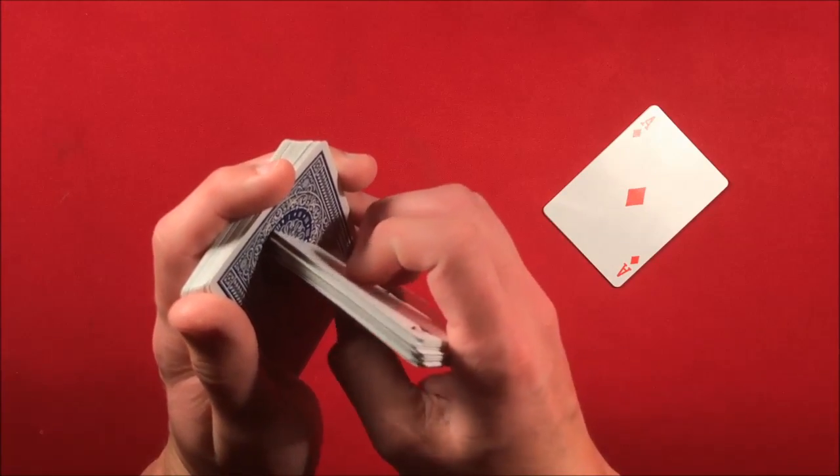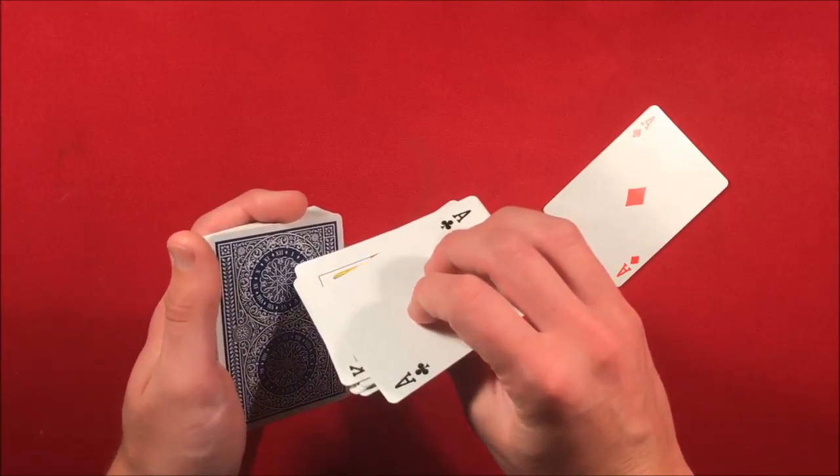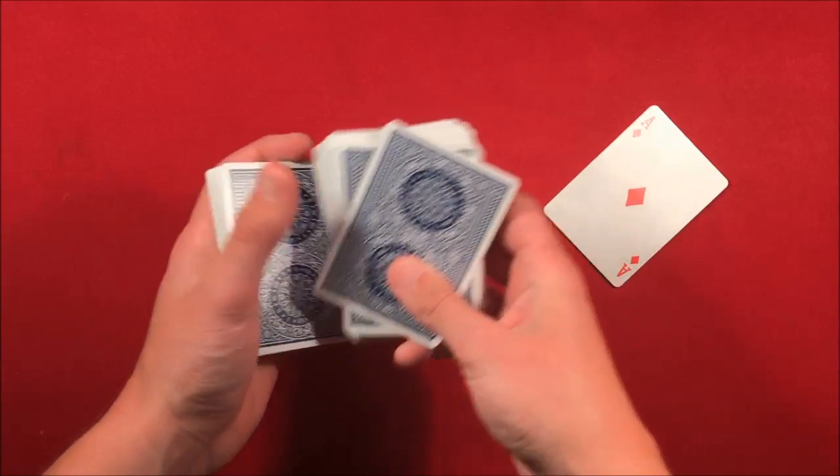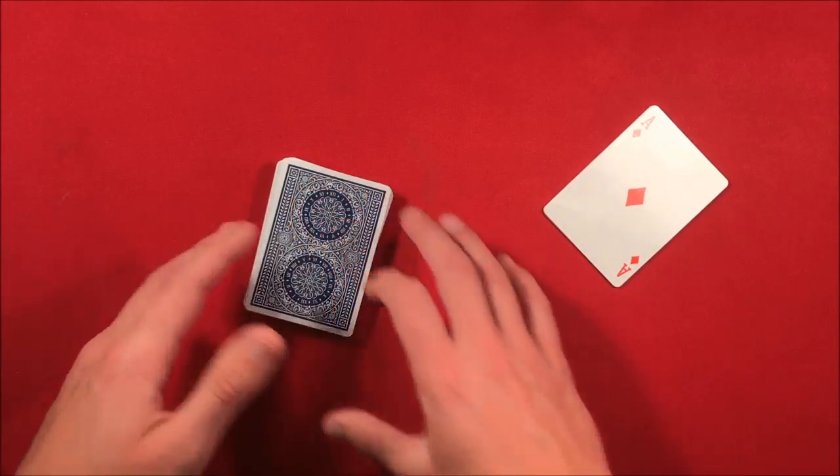Underneath it, it's just squaring up. Ace of clubs is going to be their chosen card. You show this back there, you can close up the deck and you say you know what, I actually knew you're going to pick the ace of clubs.